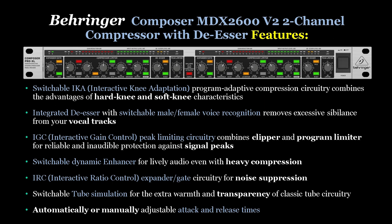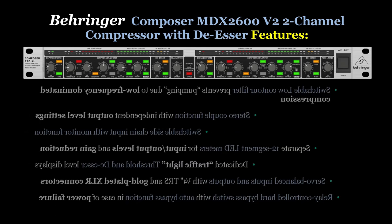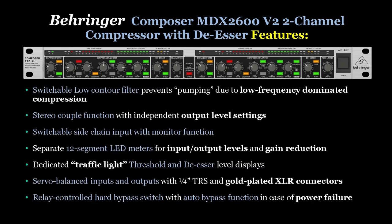The unit also has an integrated de-esser with switchable male/female voice recognition. It has IGC peak limiting circuitry which combines a clipper and program limiter for inaudible protection against signal peaks. It also has a switchable dynamic enhancer, an IRC expander gate for noise suppression, a switchable tube simulation, and manually or automatically adjustable attack and release times.